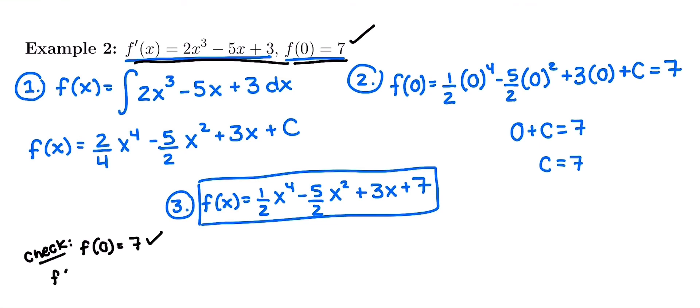And then also, if we take the derivative, do we get back to the derivative we were supposed to, the derivative given? So I'm going to bring down the power: 1/2 of 4, half of 4 is 2, x³. I have - 5/2 × 2, which is going to be - 5. Derivative of 3x is 3, and the derivative of 7 is 0 because it's a constant.